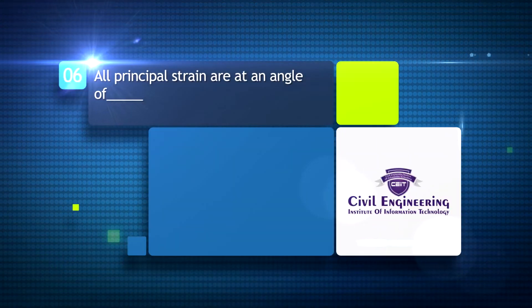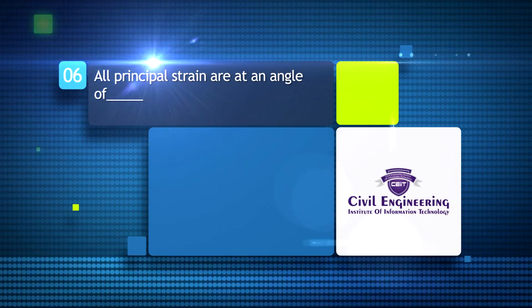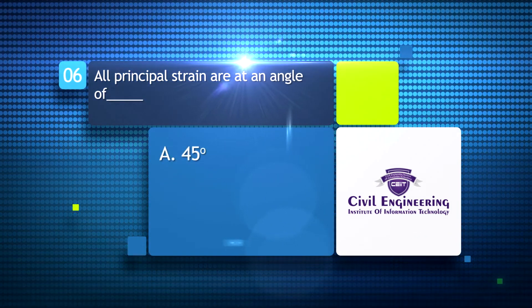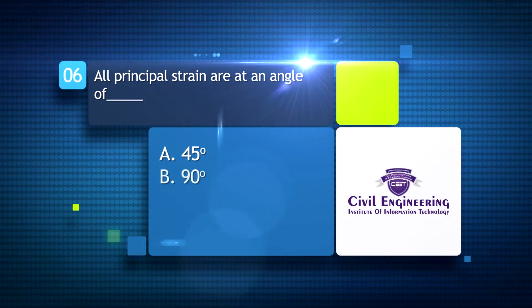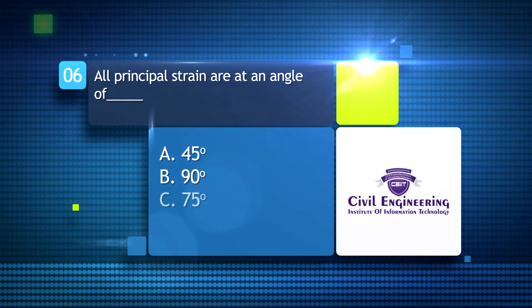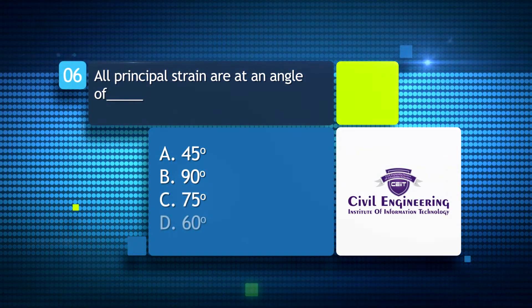All principal strains are at an angle of: A. 45 degree, B. 90 degree, C. 75 degree, D. 60 degree.